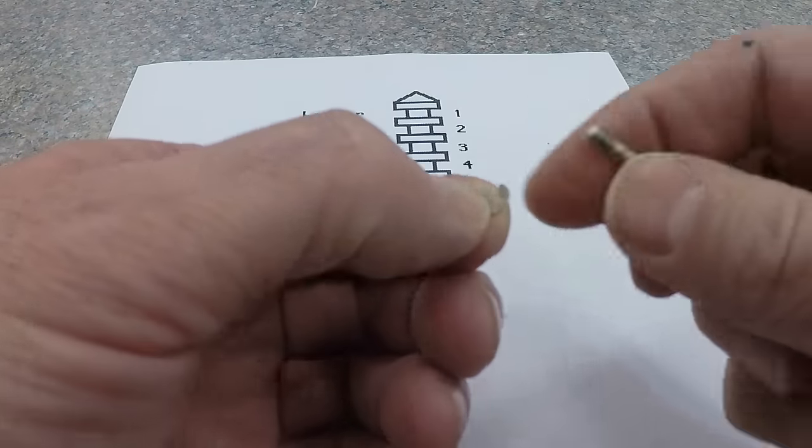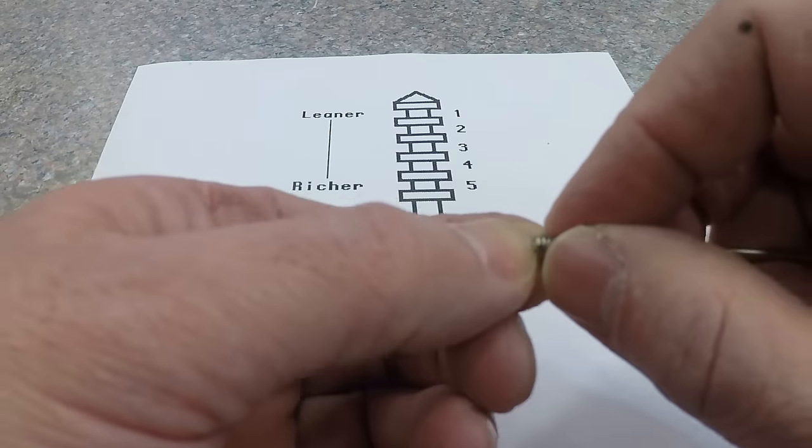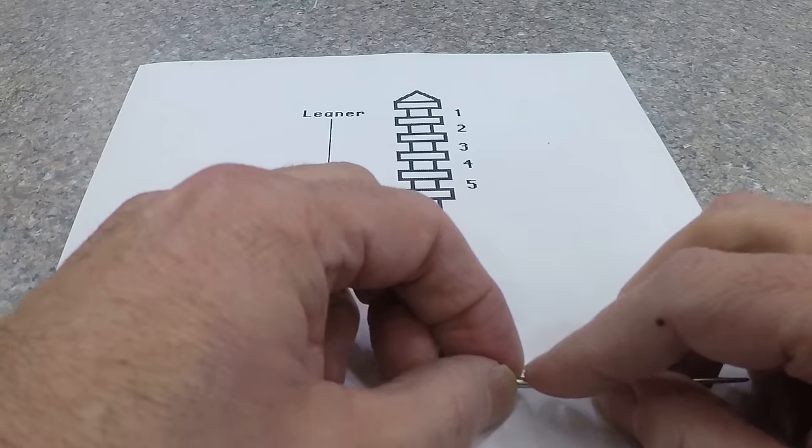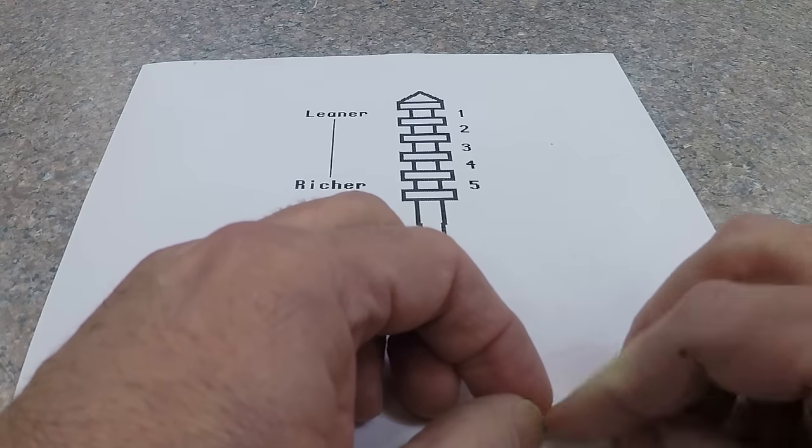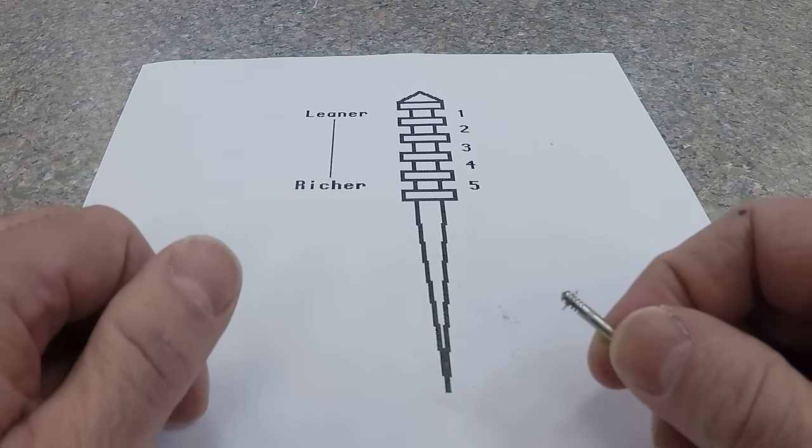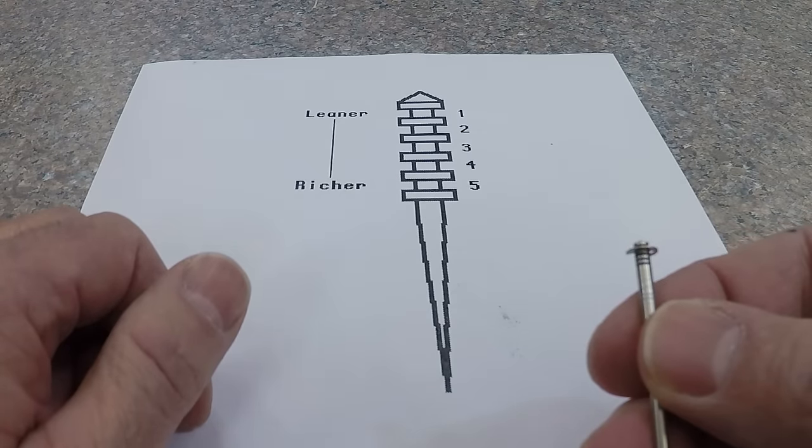Let's put it on number two here. All you do is put the round down. Again, it's elevated a little bit. Press down. Presto, you're done. It's in the number two slot.